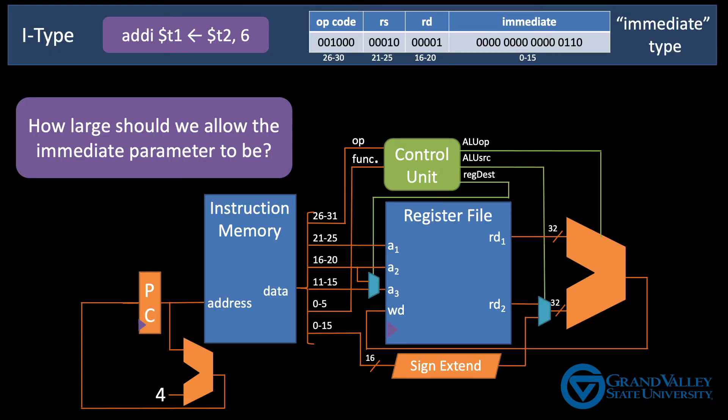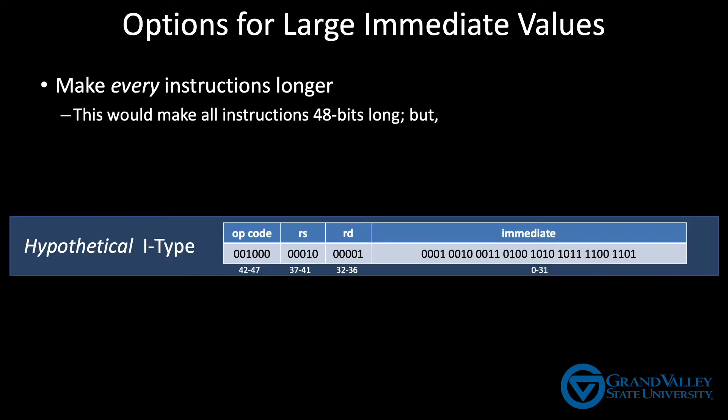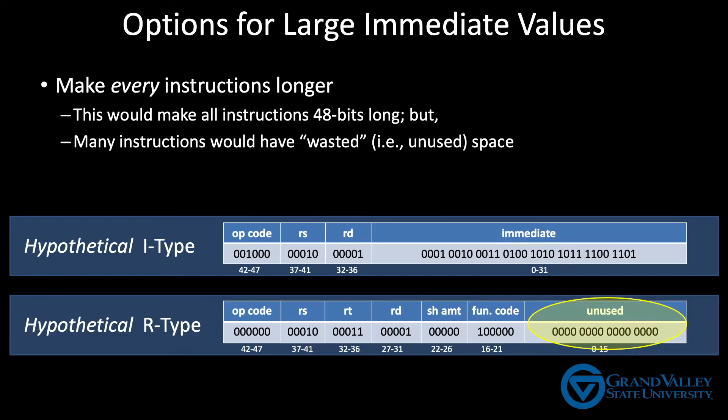What's the largest immediate value that makes sense? Well, since we have a 32-bit ALU, it's certainly reasonable to support a 32-bit immediate parameter. One way we could do this is by adding 16 bits to every instruction, thereby making all instructions 48 bits long. That would certainly be simple to implement, but it would mean that the R-Type instructions would have a lot of unused bits.